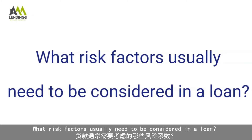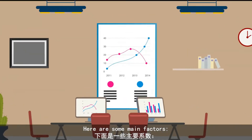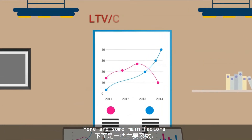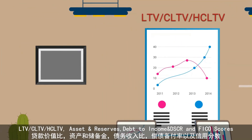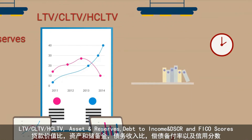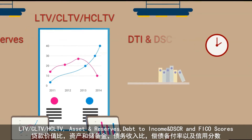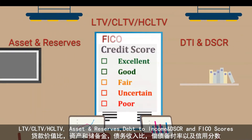What risk factors usually need to be considered in a loan? Here are some main factors: LTV, CLTV, HCLTV, Assets and Reserves, Debt to Income, DSCR, and FICO scores.